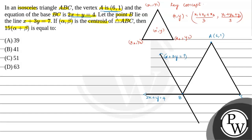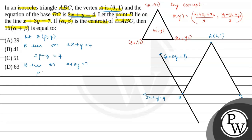Now let us find the coordinate of B. Let B have the coordinate (p, q). B lies on the line 2x + y = 4, so it must satisfy the equation, giving us 2p + q = 4. B also lies on the line x + 3y = 7, so it also satisfies that equation, giving us p + 3q = 7.